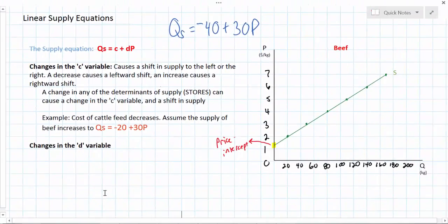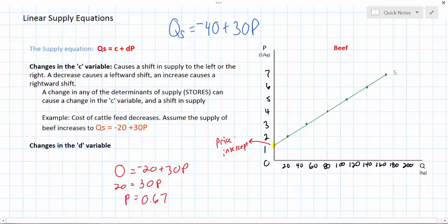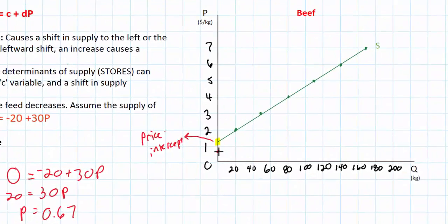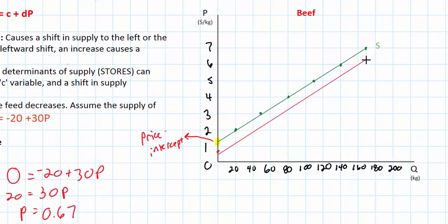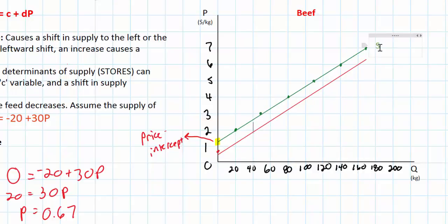What impact will this have on the supply curve? The first thing we need to do is find the new p-intercept. Using our new supply equation, we set quantity supplied to zero and solve for p. The new price at which the supply curve will begin is $0.67. The p-intercept has decreased since the cost of feed has decreased. Nothing will happen to the slope since the slope is dictated by the d variable, not the c variable. When the slope stays the same but the p-intercept changes due to an increase in supply, we end up with a new supply curve to the right of our original, representing an increase in the supply of beef.